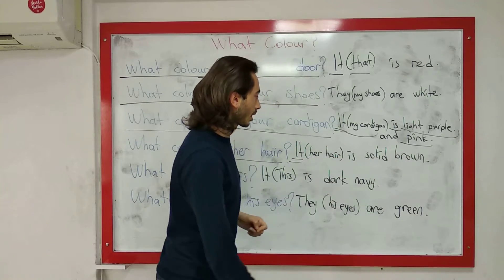Şimdi sizin için küçük bir ödev hazırladım. Boş bırakılan yerlere uygun yardımcı fiili yazacaksınız ve soruları cevaplayacaksınız. Sorular: What color ___ the Turkish flag? What color ___ grass? What color ___ a rainbow? What color ___ snow? What color ___ apples? What color ___ these board markers? Cevaplarınızı bekliyorum.